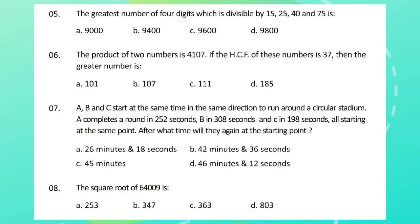Question 7: A, B, and C start at the same time in the same direction to run around a circular stadium. A completes a round in 252 seconds, B in 308 seconds, and C in 198 seconds, all starting at the same point. After what time will they be again at the starting point? Question 8: The square root of 64009 is?